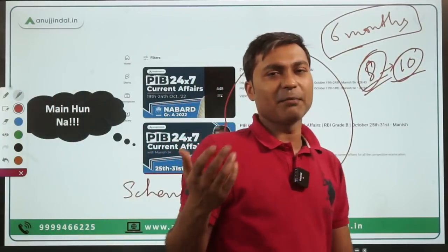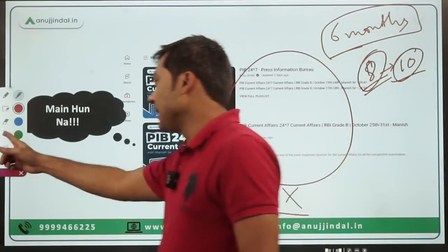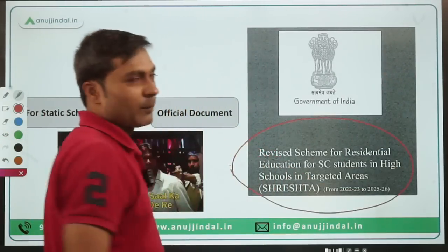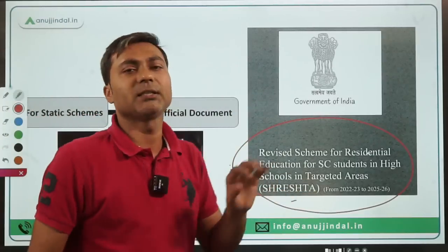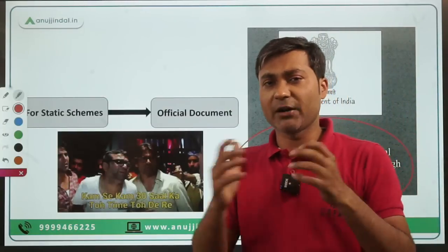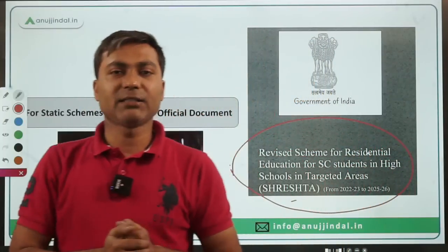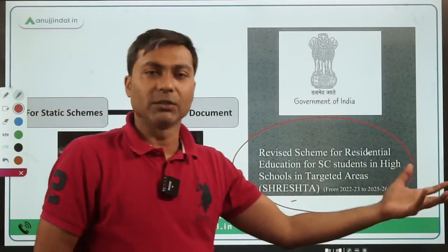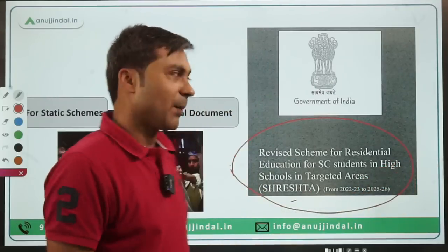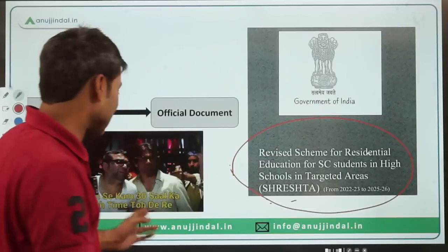For other schemes like MGNREGA, what I do is I pick up the official document of every scheme. For example, this is an official document of the Shrestha scheme. But the problem with these official documents is that each scheme document consists of at least 100, 150, or 200 pages. It is not possible for you to simplify or compress that scheme into two pages, so you have two options.